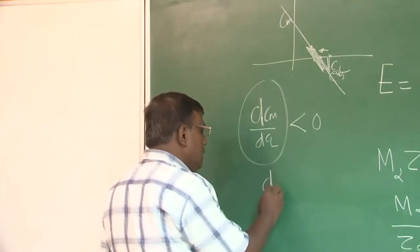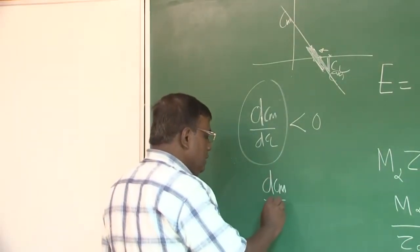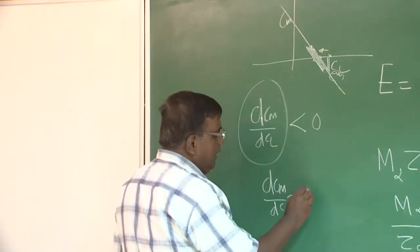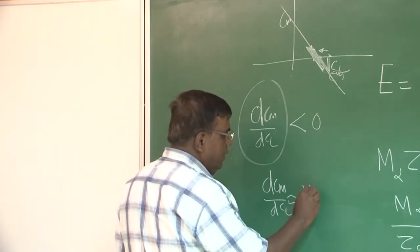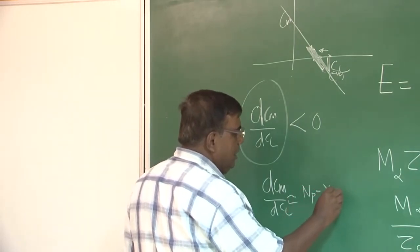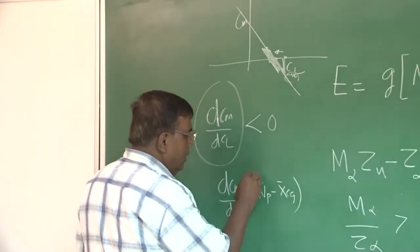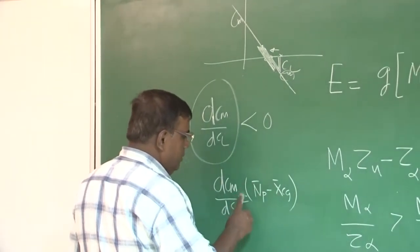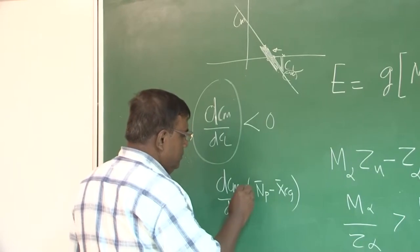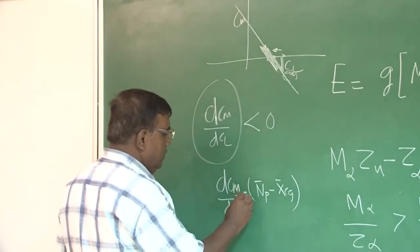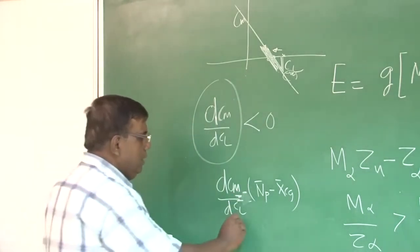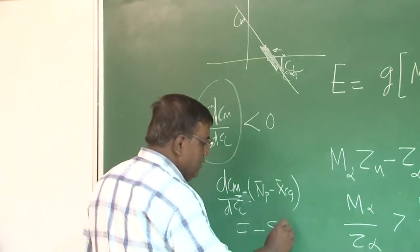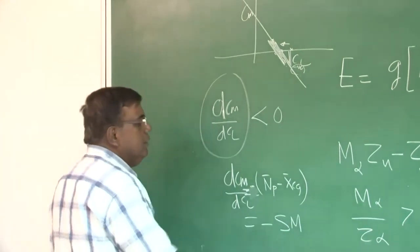Also we have seen earlier, dC_m/dC_l is approximately, I can write as distance between neutral point and x_CG of the airplane, the minus sign. And this is nothing but, I can write minus as static margin or stability margin, this we know.